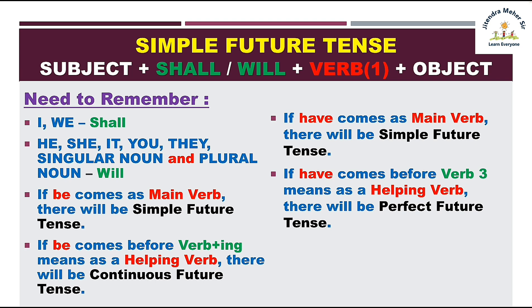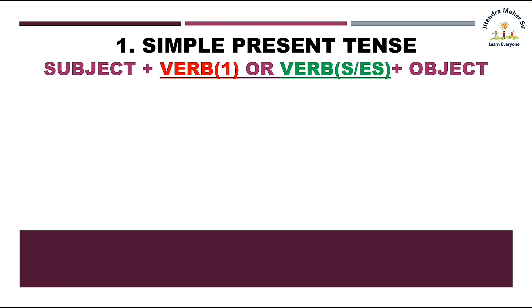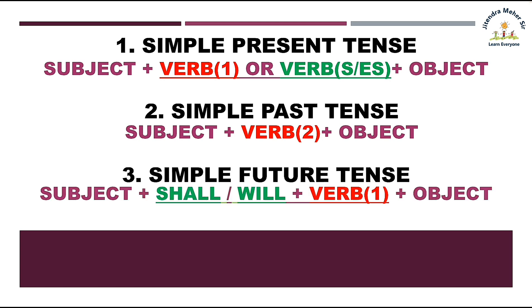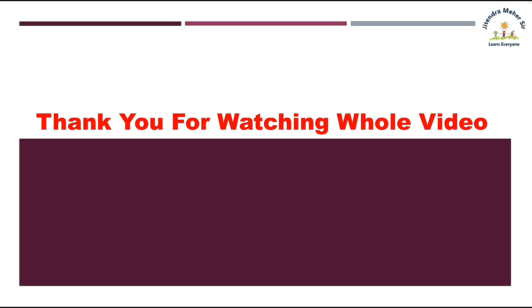Mujhe lagta hai ab simple present, simple past, aur simple future aapko samajh mein aa gaya hoga — unka istamal bhi aur jo cheezein remember rakhni hain woh bhi. Last mein teen tenses ke rules dobara dekhte hain: Simple present — subject ke baad verb ka first form ya verb+S/ES, phir object. Simple past — verb ka second form, subject aur object waise ka waisa. Simple future — shall/will ke baad verb ka first form. Aasha karta hoon video samajh mein aa gaya hoga. Practice karo har ek tense mein 100 sentences tak. Thank you for watching the whole video!